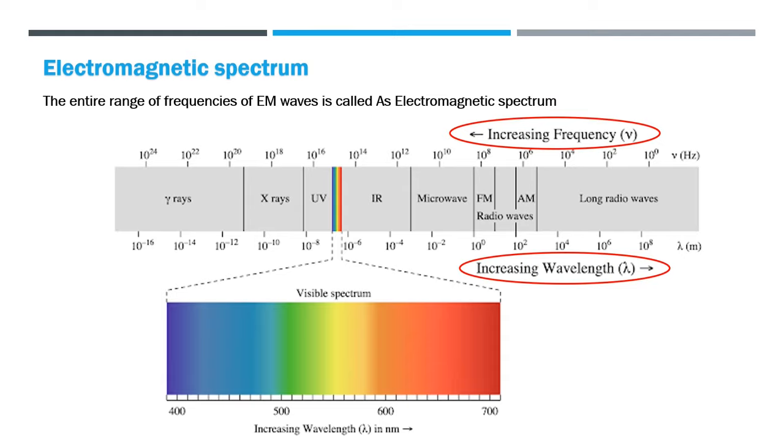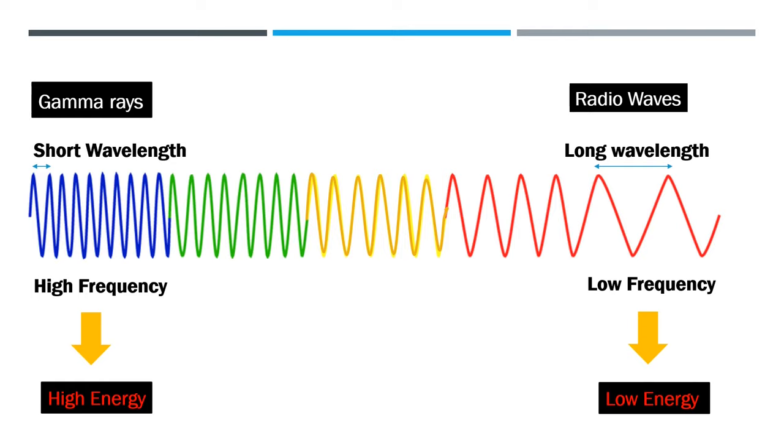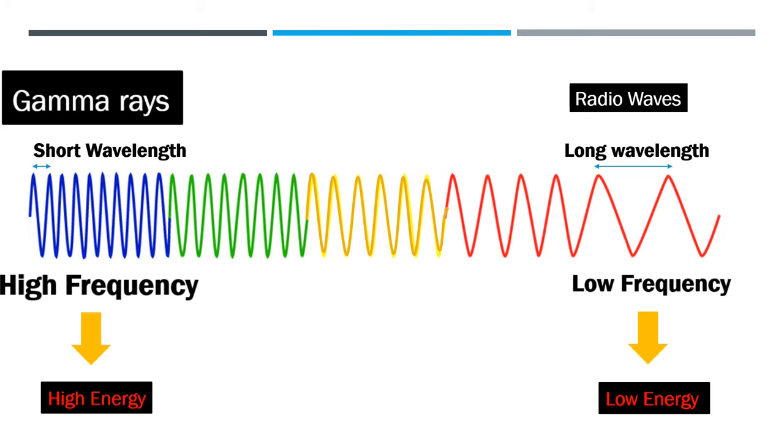The entire range of frequencies of electromagnetic waves is called the electromagnetic spectrum. The other electromagnetic waves apart from visible light include gamma rays, x-rays, UV light, infrared, microwaves, and finally radio waves. We have divided the entire electromagnetic spectrum by the frequency. Highest frequency waves are called gamma rays and the lowest frequency EM waves are called radio waves.